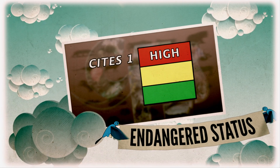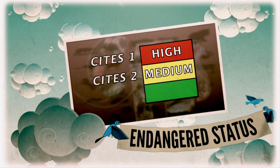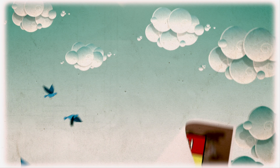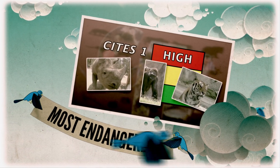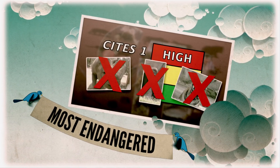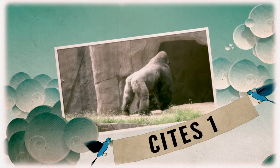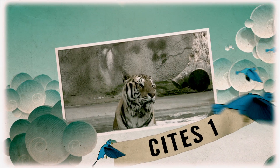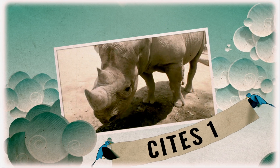CITES classifies animals and plants into three classes. Animals that are classified CITES1 are the most endangered — they could go extinct if not strictly protected and regulated. Examples would be a gorilla, a tiger, or even a rhinoceros.